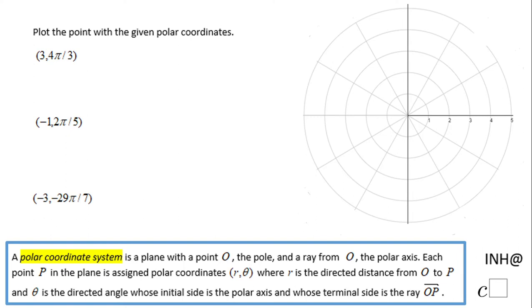Welcome or come back to any help at c-square. In this example we're going to plot three points given in polar coordinates. What you see here we call polar coordinates, and all three are in polar coordinates. If you have a grid like this that will be helpful.